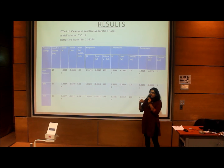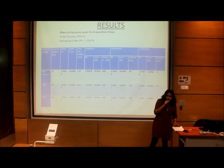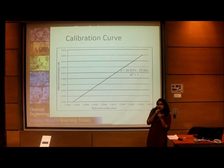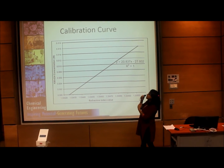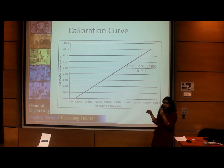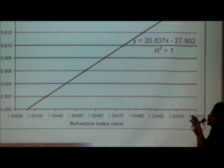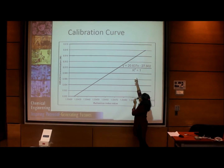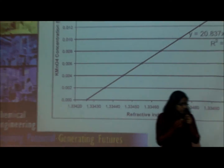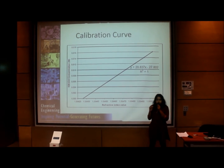We can notice that as pressure is reduced, the time for the first bubble decreases, meaning the solution boils faster. Concentration was calculated using a calibration curve from the lab manual, specifically for potassium permanganate — concentration plotted against refractive index. The equation is Y = 20.837x − 27.802. One limitation of this calibration curve is its minimum refractive index of 1.3343; any value below this produces a negative concentration result.